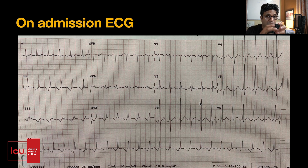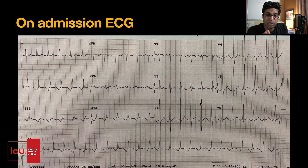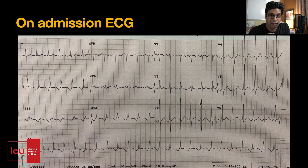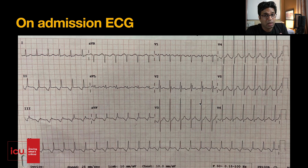Whenever you see a tachycardia, you need to think about where it is originating — it's a conduction problem. Rhythm can originate from the SA node, with an upright P wave in lead 2 and inverted in V1. It can originate in the AV node — junctional rhythm — or in the ventricles, or in the atrium other than the SA node, which we call atrial rhythms: atrial flutter, atrial tachycardia, or atrial fibrillation. Rhythm travels from atria to ventricles via the AV node, or through an accessory pathway — WPW syndrome.